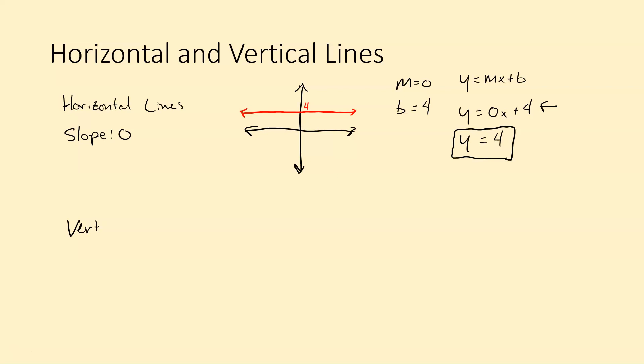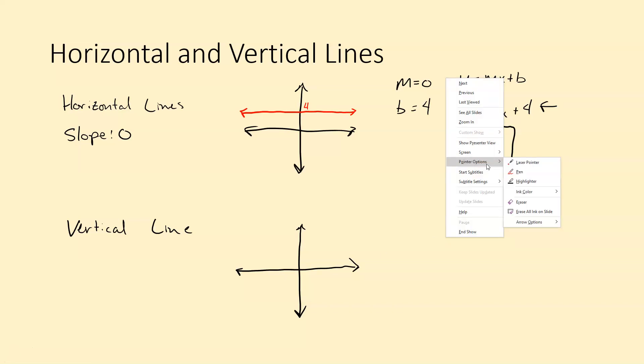And then vertical line is pretty similar. So a vertical line, so let's use blue this time. Go this way. Let's say it intercepts the x-axis at 5.